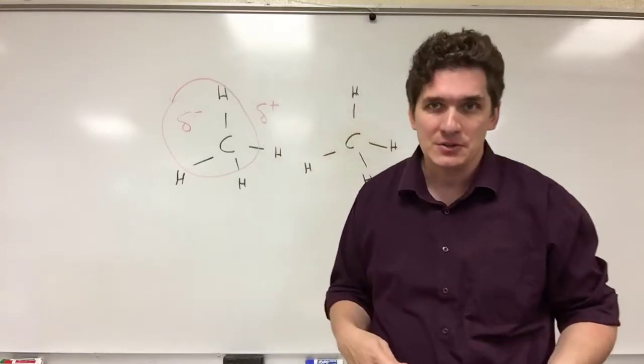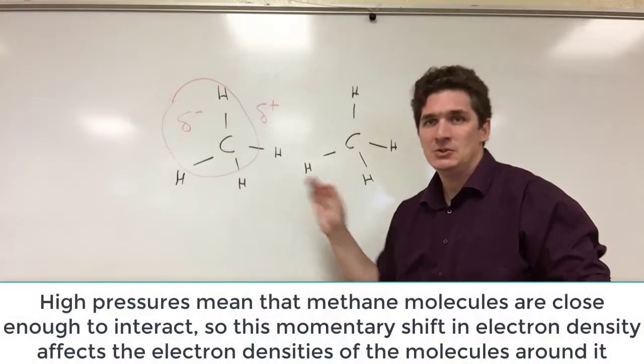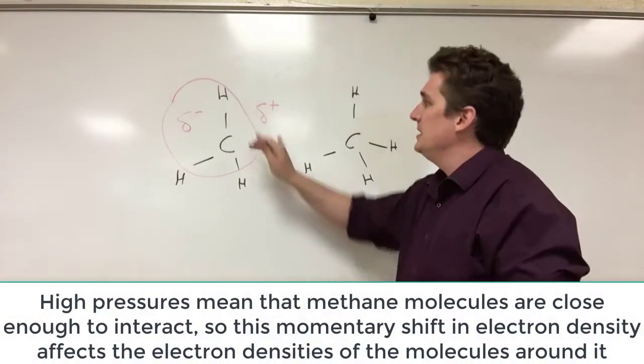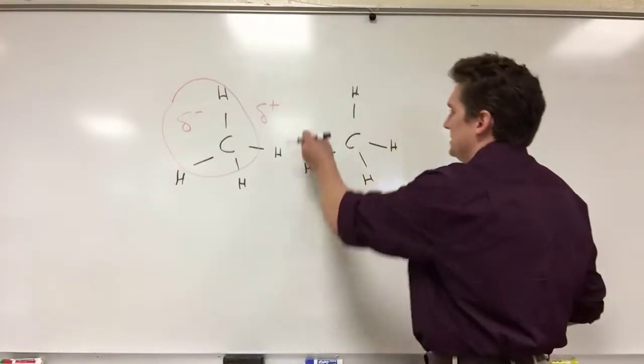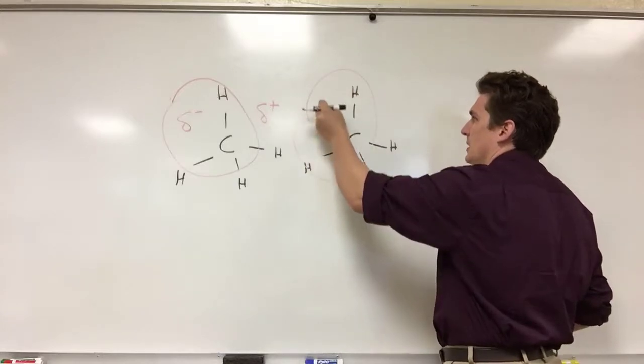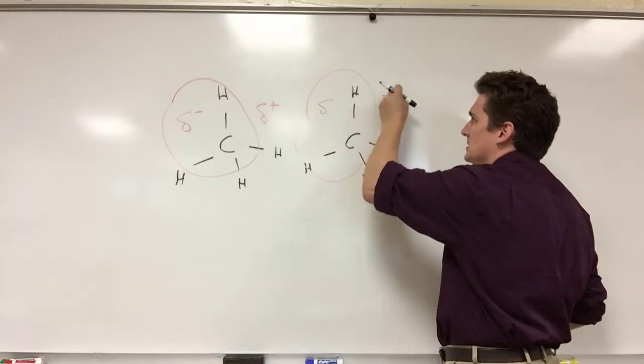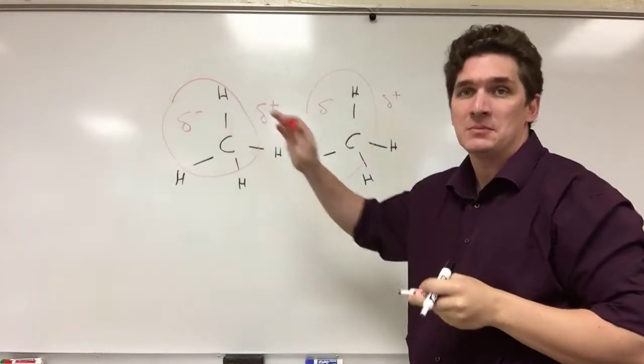But if we're at high pressures, there's a good chance two of these will be close to each other. This positive charge here will draw the electron density to one side of the molecule, and we'll end up getting a positive and a negative side of this molecule as well. This is what our deltas are implying.